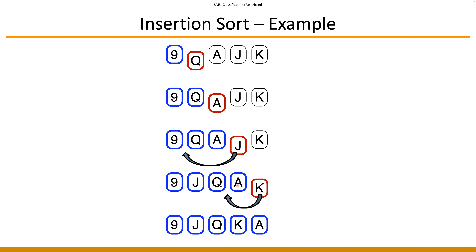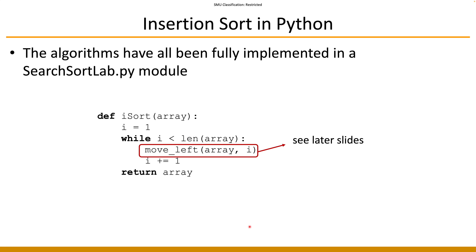You then process the last element K. K is compared to A — it's actually smaller, so you move left. K is greater than Q, so that is the right place — K is inserted between Q and A. At the final step, all elements are colored blue, indicating that the whole list is fully sorted.